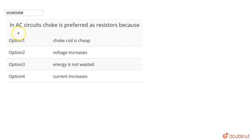Hello everyone, today we will solve this question which is given on AC circuits. Choke is preferred as a resistor because we know what is a choke. A choke coil is basically an inductor.